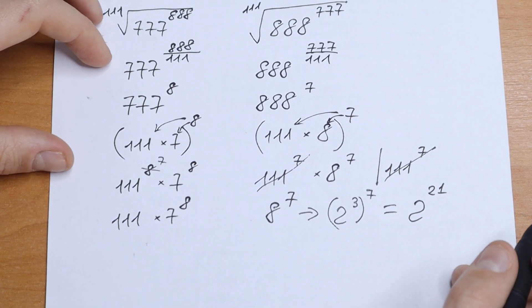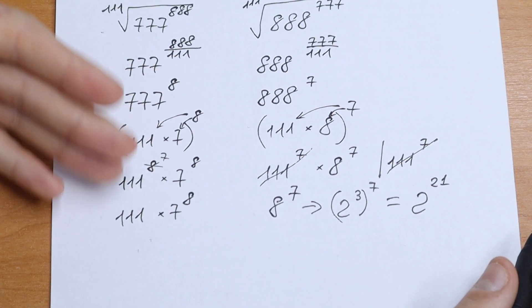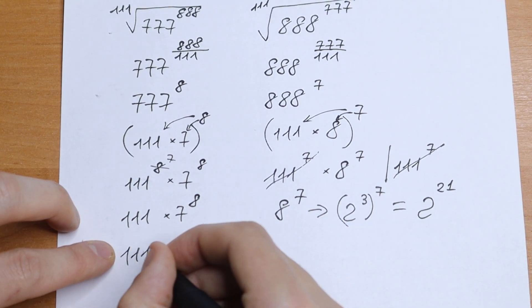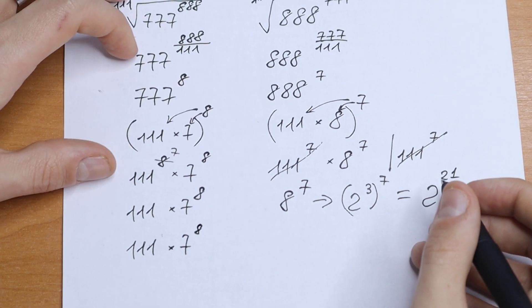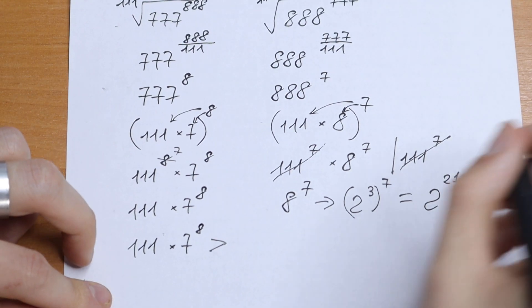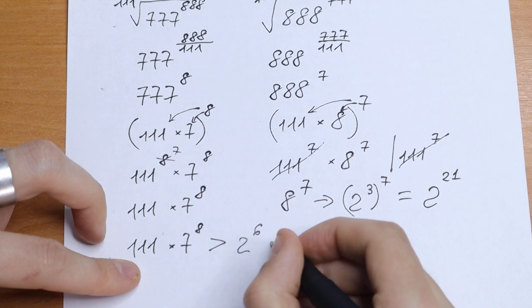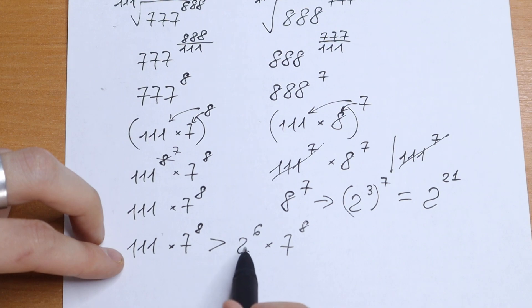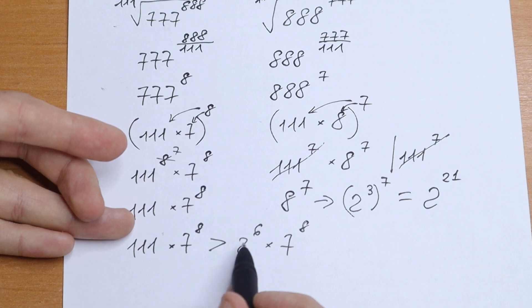Now for the left side — 111 times 7 to the 8th power — here's a really good trick. Notice that 111 is greater than 2 to the 6th power, which equals 64. So our expression is greater than 2 to the 6th power times 7 to the 8th power, since 111 is greater than 64.